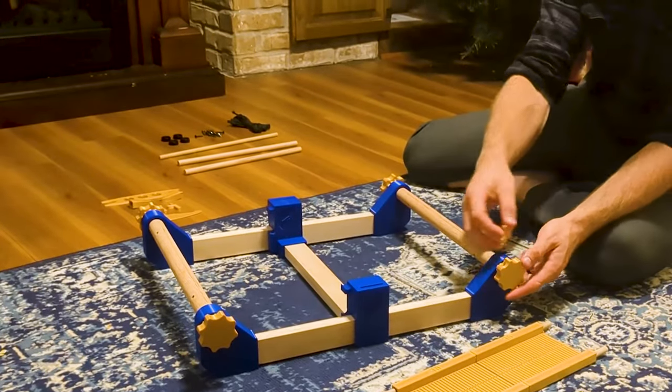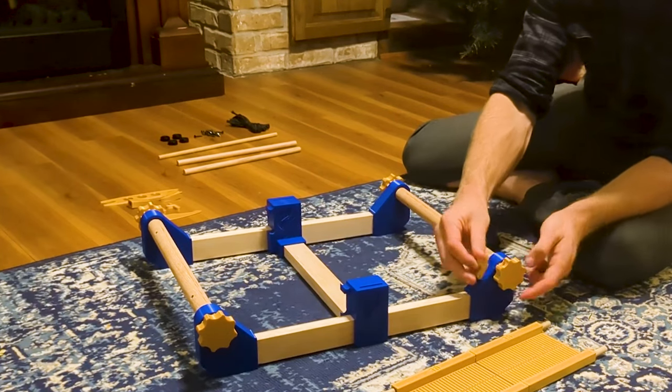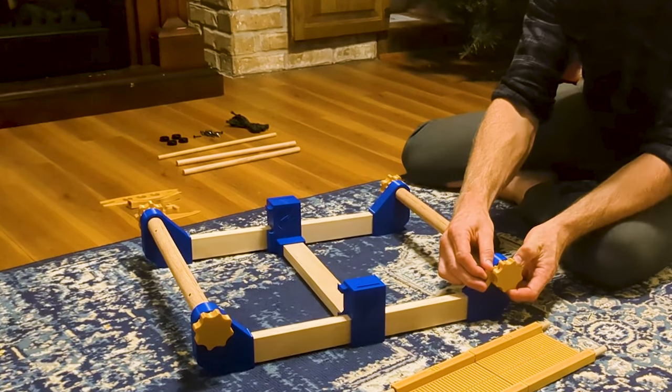We've now come to these pieces. This is a pawl, and it goes with the ratchet. This has little teeth on it that interface with those teeth, and it's going to stop it from rotating forward.